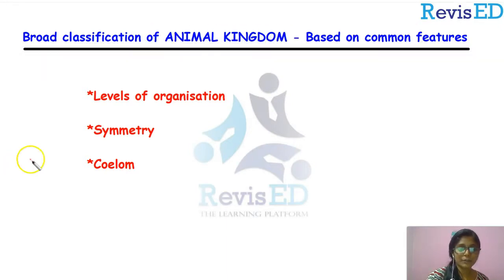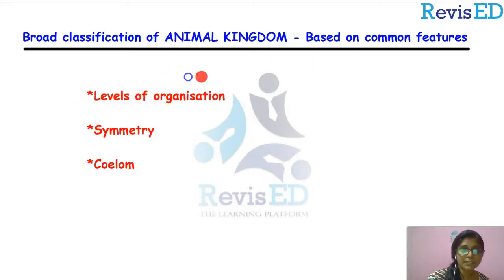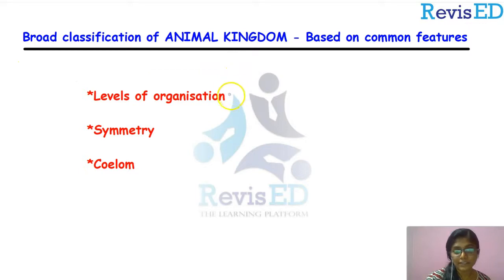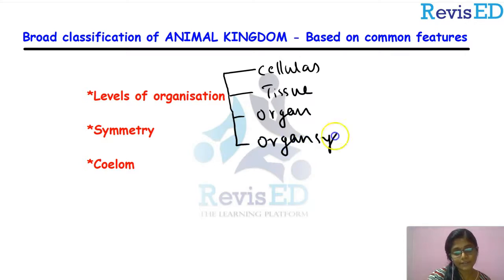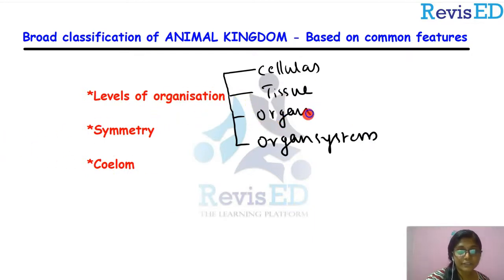Now, what are the common features used here to classify animals? The first point is levels of organization. The levels of organization include cellular level, tissue level, organ level, and also organ system level. Using these categories, we are going to classify animals in the next slide.